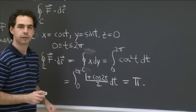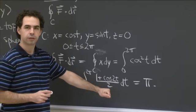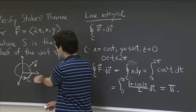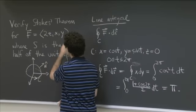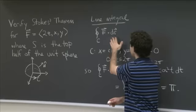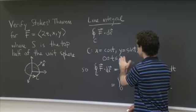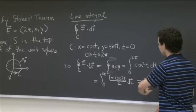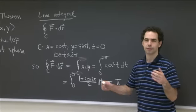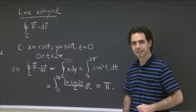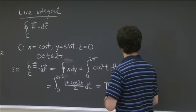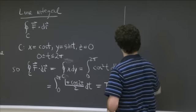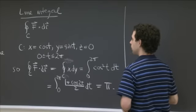So the line integral equals π. That was very straightforward. We had our circle, we had our field, we parametrized the boundary curve, and then just computed the line integral. It was a nice easy one — you just needed one trig identity.